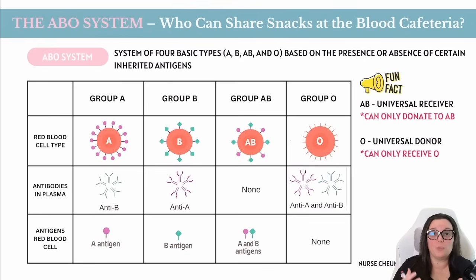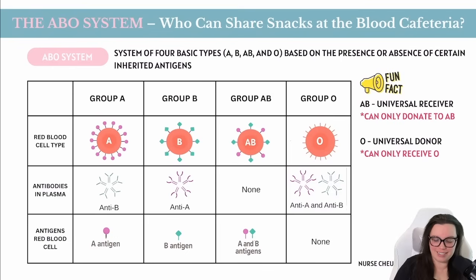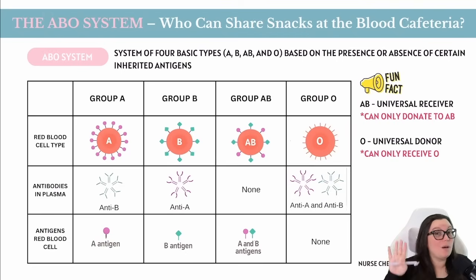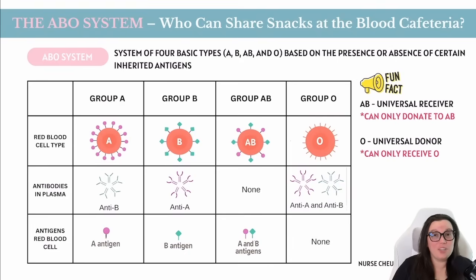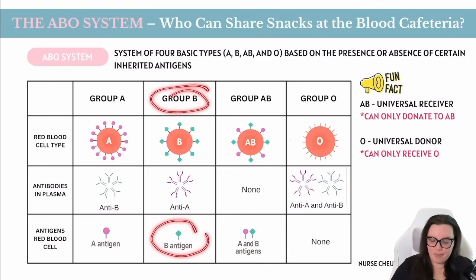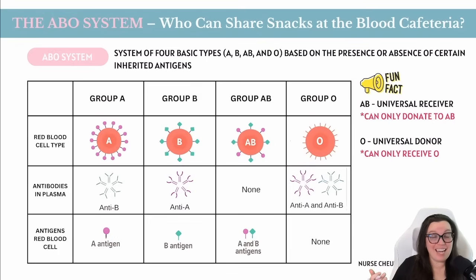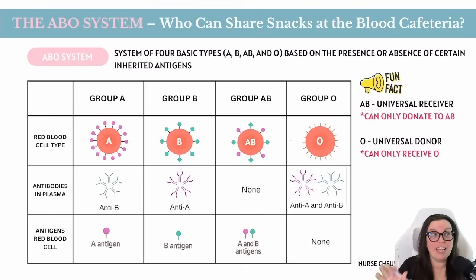Because your body always has mechanisms to protect itself, it creates antibodies against the glycoproteins that you don't have. Type A has A antigens, so it creates anti-B antibodies to keep B away. Type B has B antigens, so it creates anti-A antibodies to prevent any foreign A invaders.